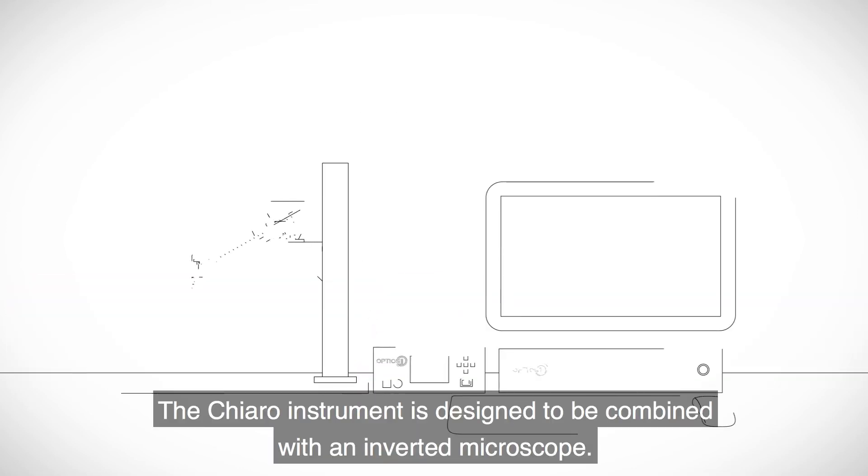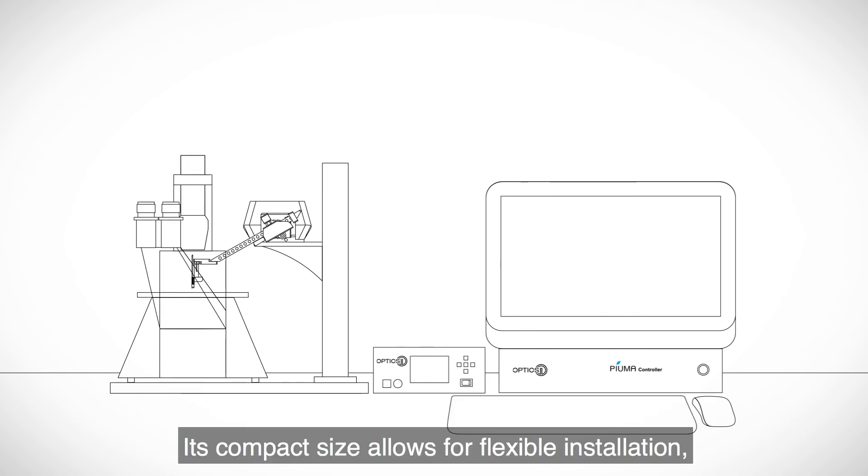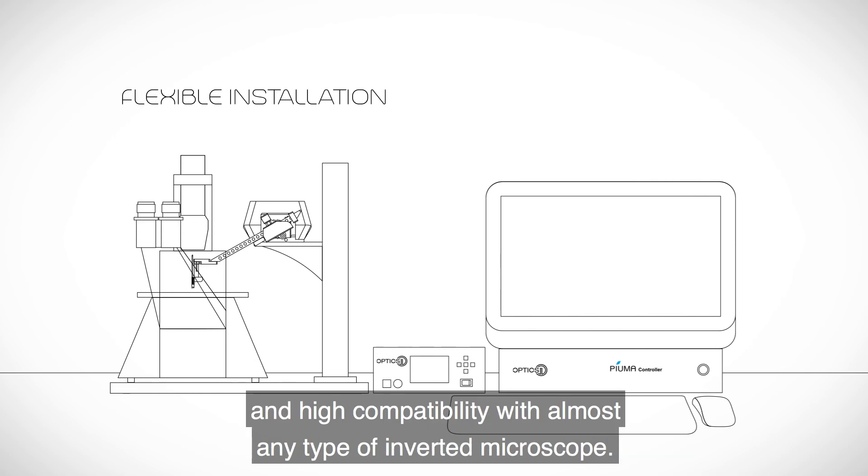The Chiaro instrument is designed to be combined with an inverted microscope. Its compact size allows for flexible installation and high compatibility with almost any type of inverted microscope.